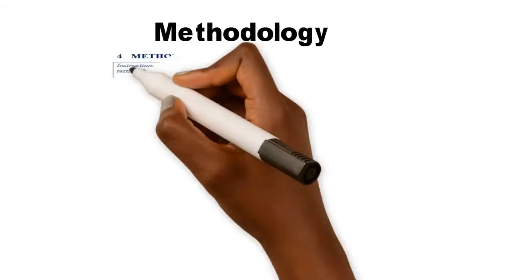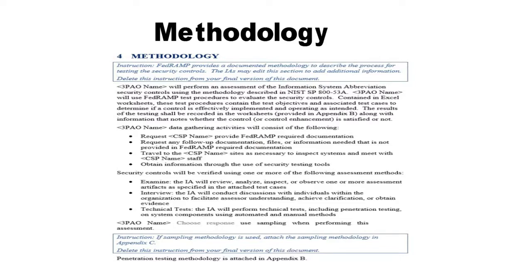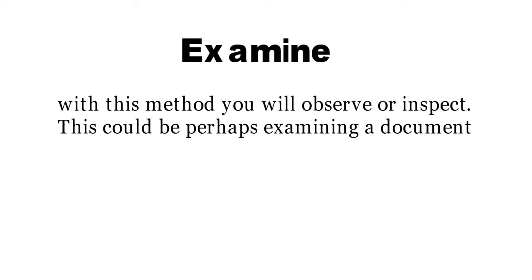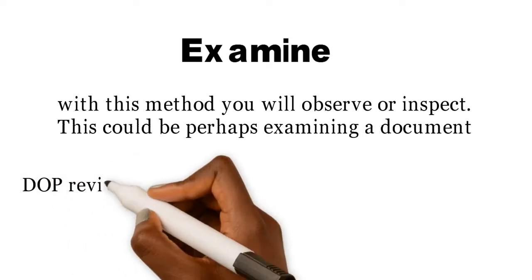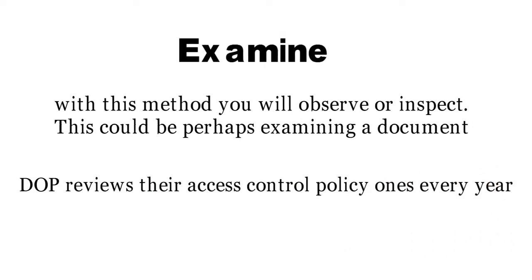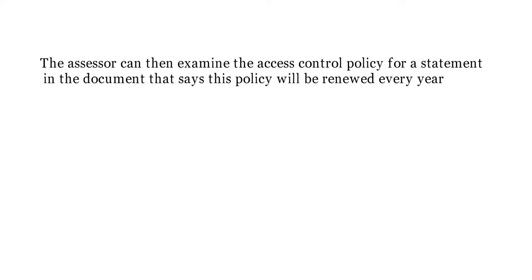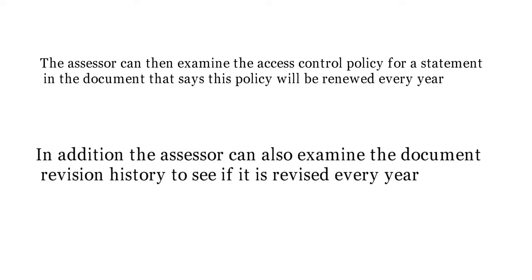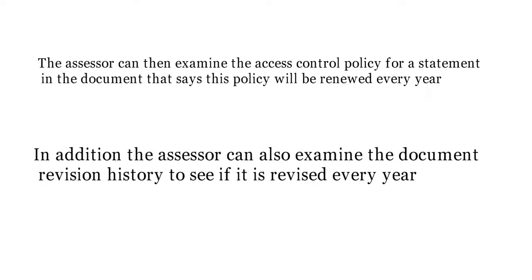Sections to note in the SAP include your methodology — this is where you describe the different ways to validate the implementation statements. One method is to examine, where you will observe or inspect, perhaps examining a document. For example, if the implementation statement says DOP reviews their access control policy once a year, the assessor can examine the policy for a statement saying it will be renewed every year, and also examine the document revision history to see if it is revised every year.